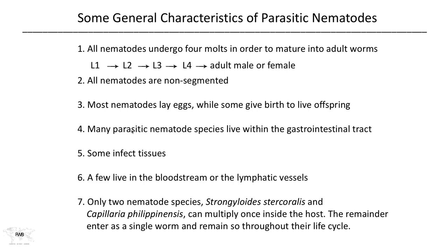Many parasitic nematode species live in the gastrointestinal tract, either in the small or large intestine, and we'll see plenty of examples of those. Some of them even infect tissues. A few live in the bloodstream or lymphatics. Only two nematode species — Strongyloides stercoralis and Capillaria philippinensis — begin as a single worm and can actually reproduce inside the same host to make more adults from a single worm infection.